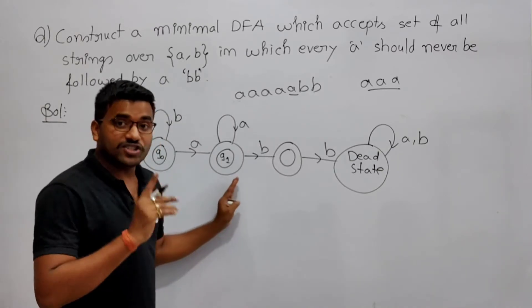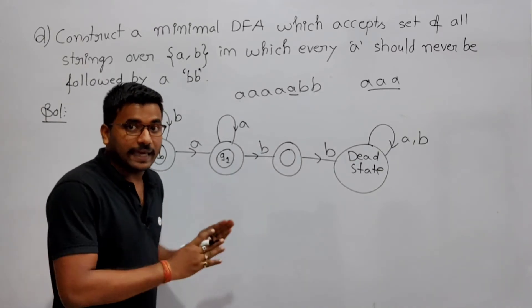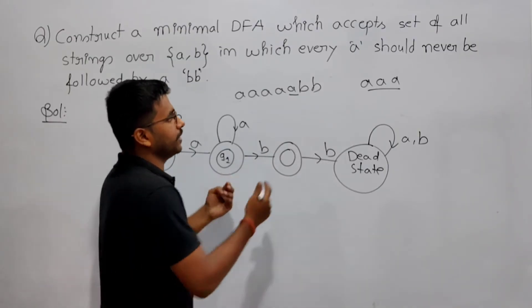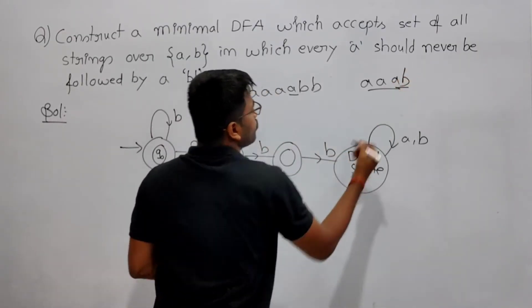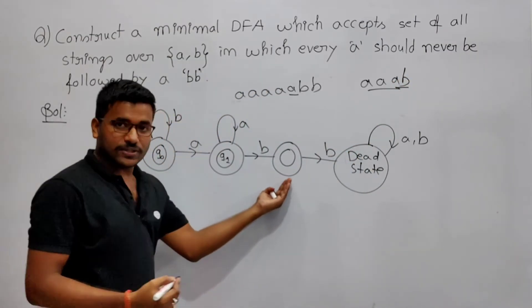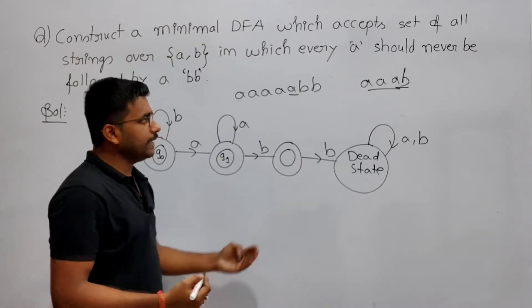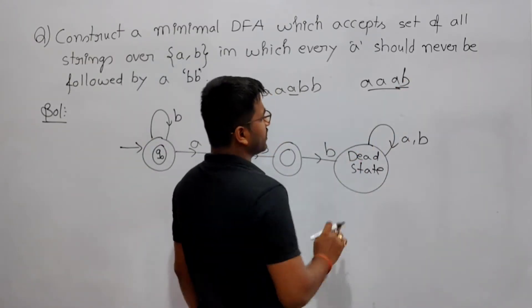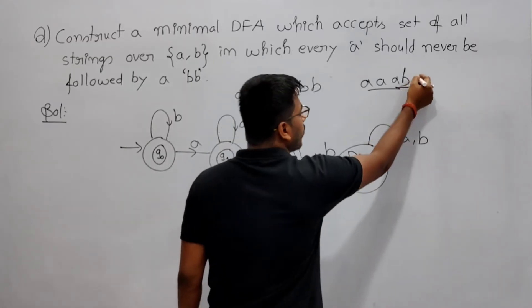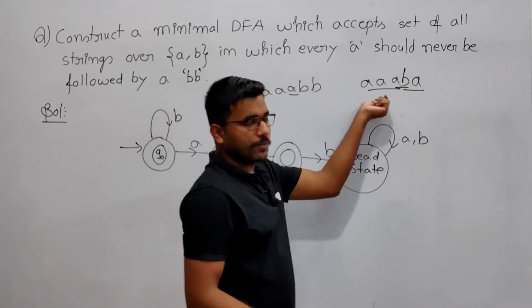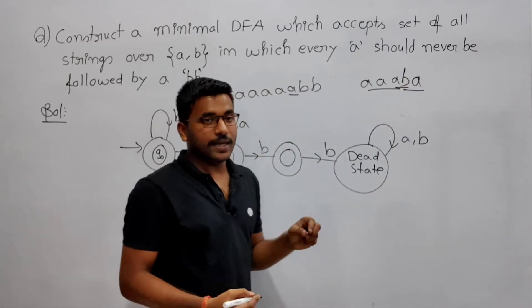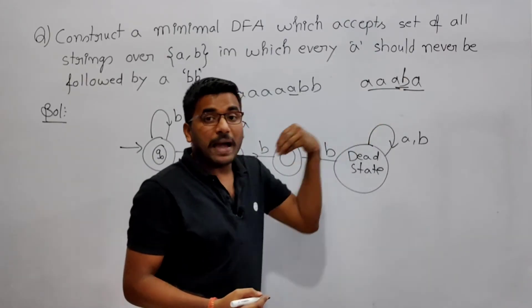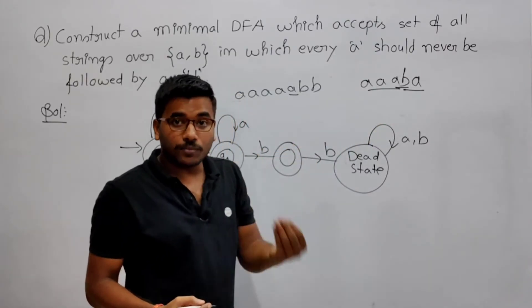Now wait and check whether after this 'a' you are getting two b's or not. If you are getting a single b — like any number of a's then one b — that belongs to the language, so we accept it. Now again if you get another b, you have to reject it. But if you again got 'a' — any number of a's then b, then again 'a' — now after getting that 'a', the pattern is broken.